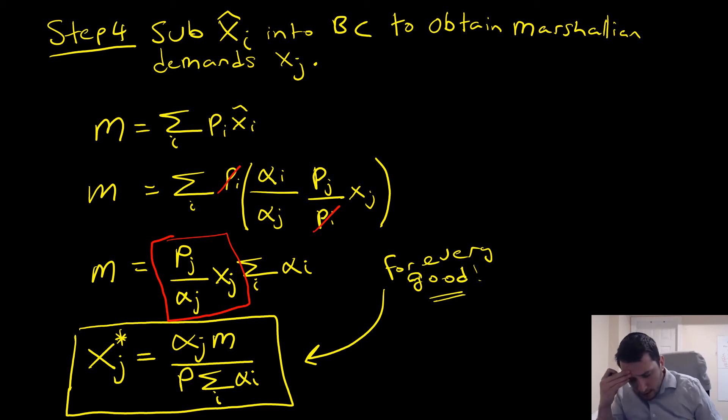You can apply this to goods of any kind. If you get a question where you have five goods or ten goods, you only really need to pay attention to two goods in order to solve for a general solution. This is how you solve for n-goods in a Marshallian demand case. I hope this helps. Take care.